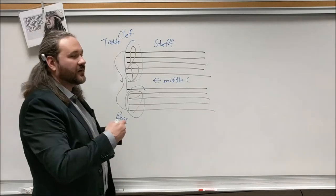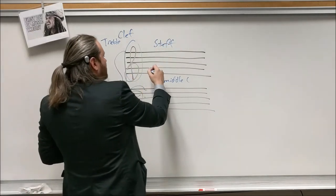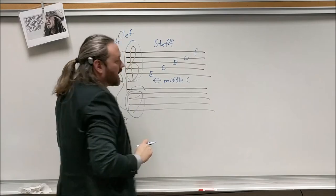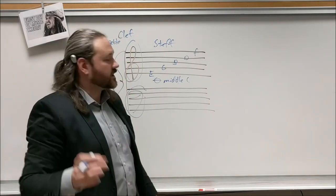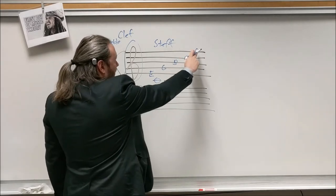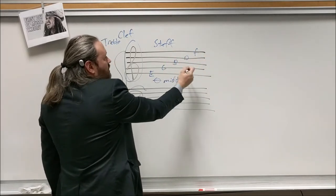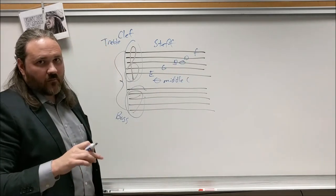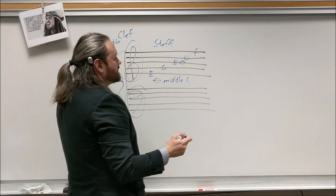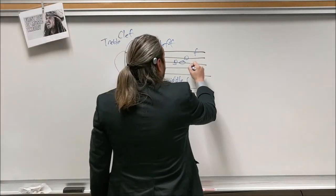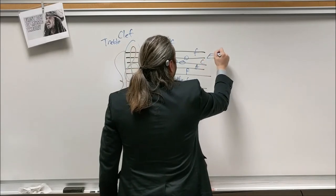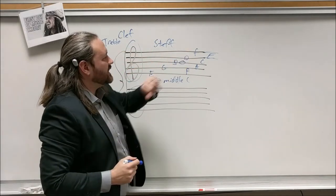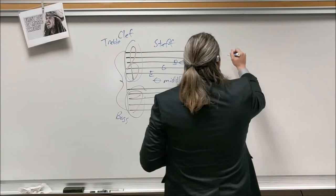The lines of the treble clef staff are E, G, B, D, F — so a note on the top line is F, two octaves above middle C. The spaces spell out F, A, C, E — or 'face.' Most people remember the lines with the mnemonic: Every Good Boy Does Fine.